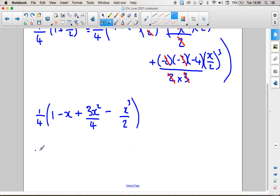Then we need to finally bring that 4 back in, that quarter back in. So that gives us a quarter minus a quarter x plus 3x squared over 16 minus x cubed over 8. And that's my final answer. Oh, I've lost my x there. That's my final answer.